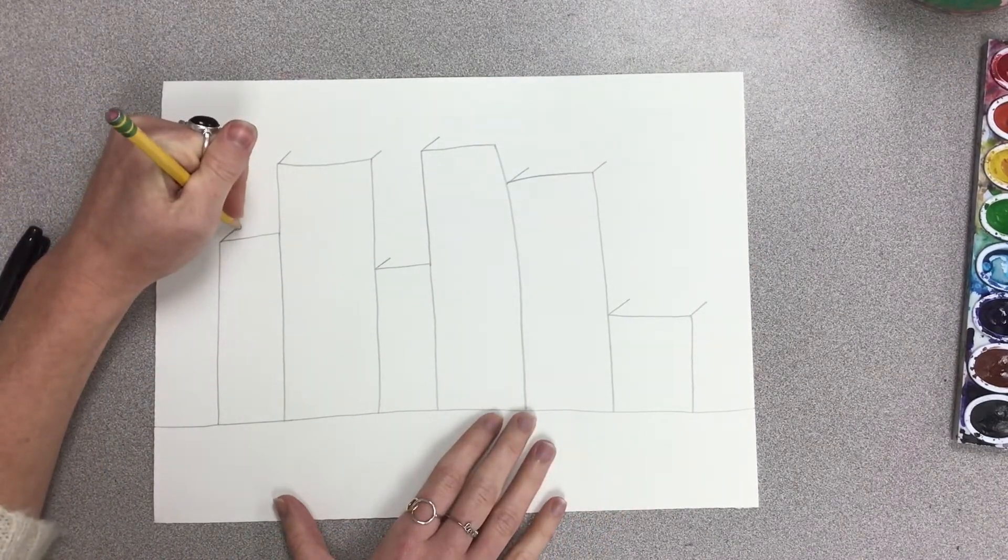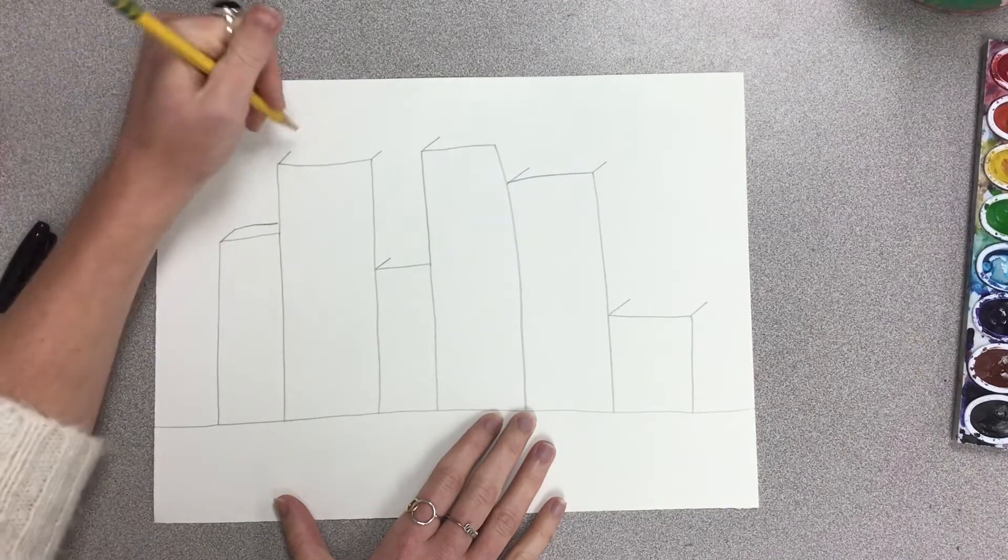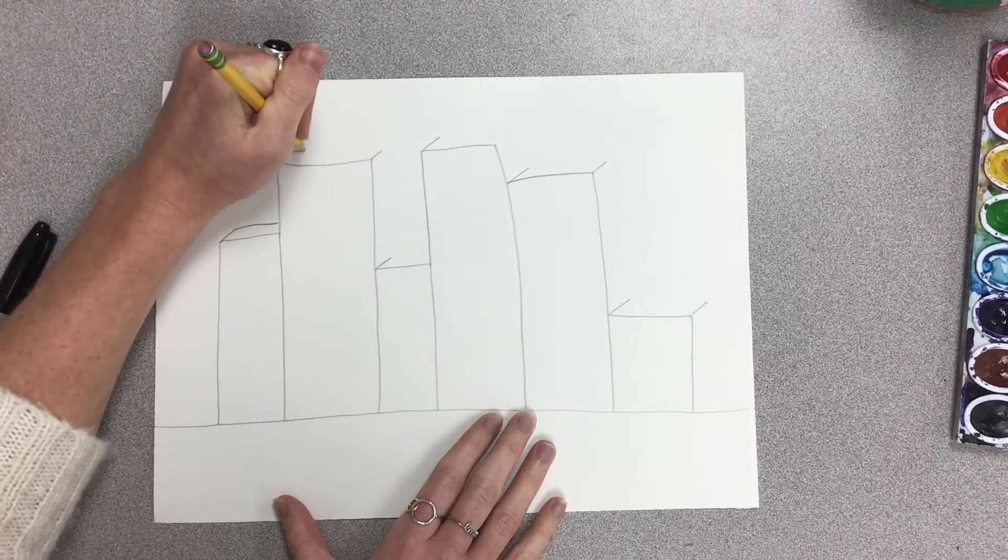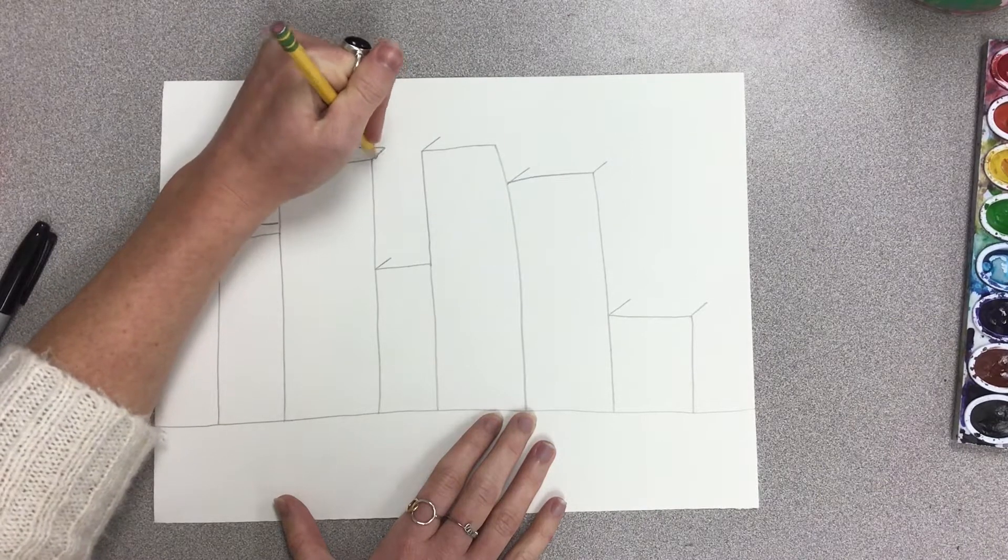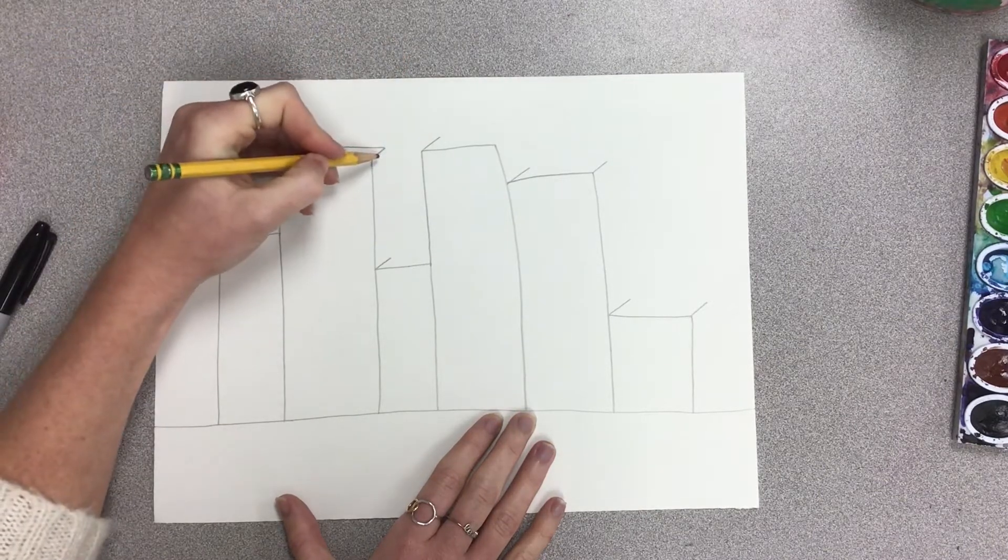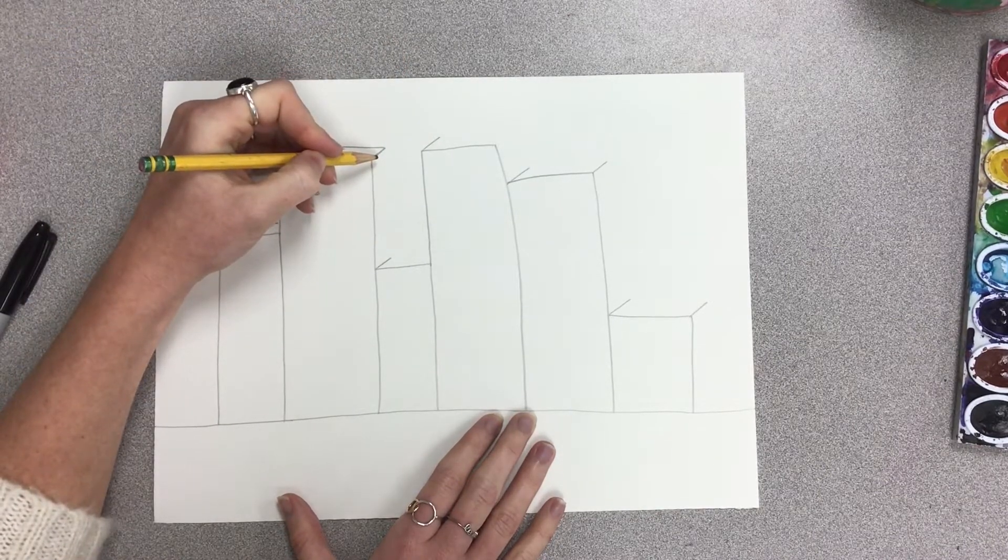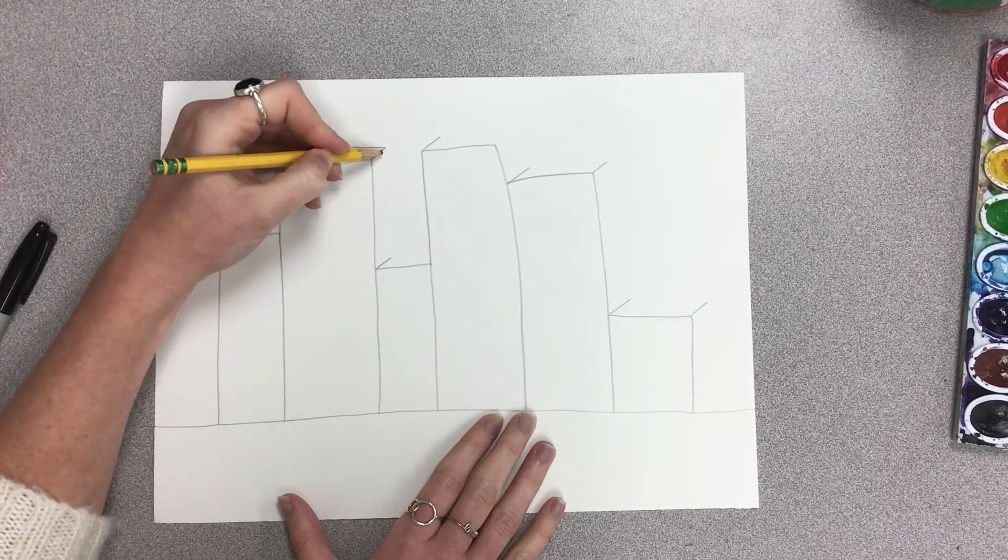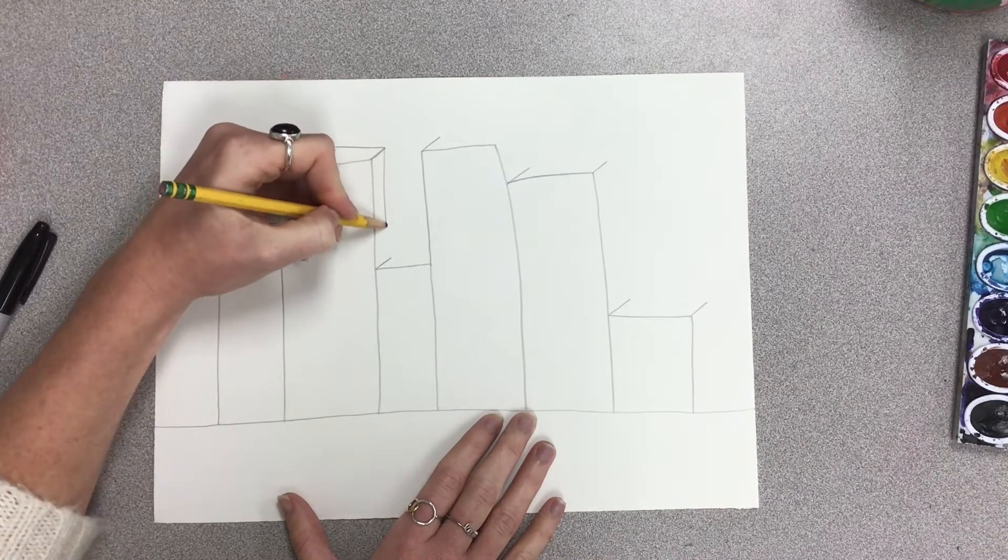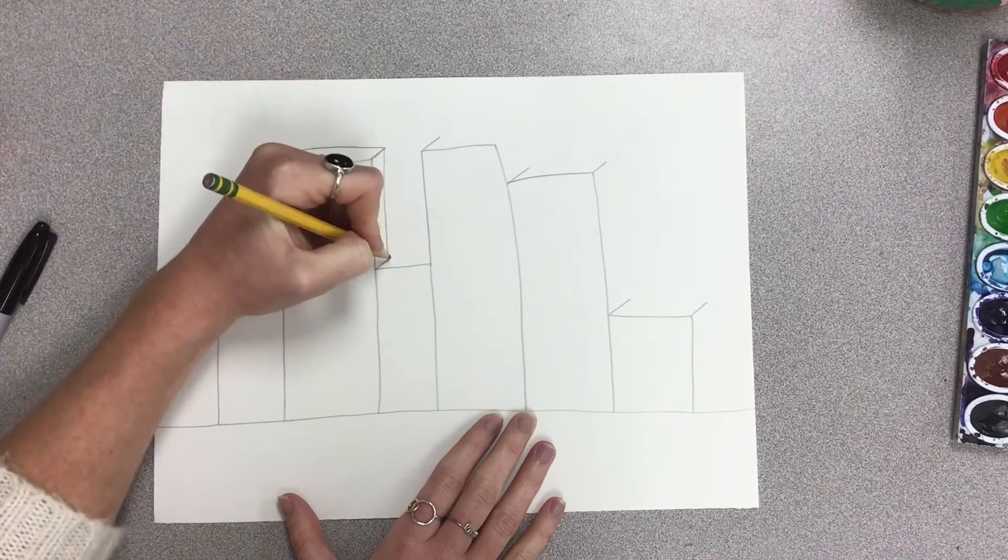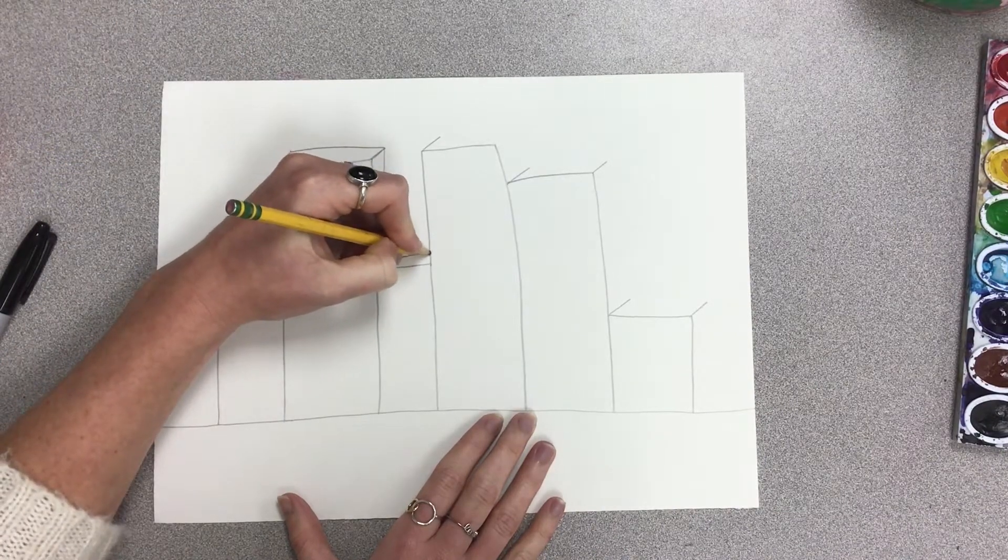Then I'm going to draw a straight line, a straight horizontal line that goes to the edge or connects the pieces together, and then I'm going to draw a vertical line that goes down the length of the building.